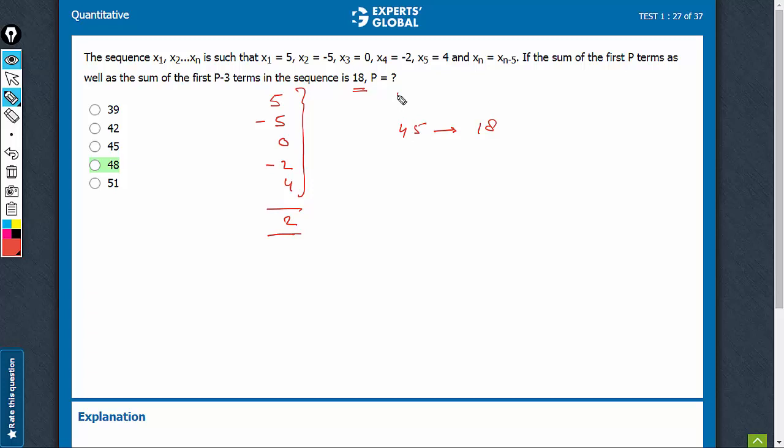If p were 45, what would be the sum of 42 terms? The last 3 would need to be subtracted from this. This 18 is the sum when all terms were added. The last 3 terms sum to positive 2. So the sum of 42 terms must have been 16.